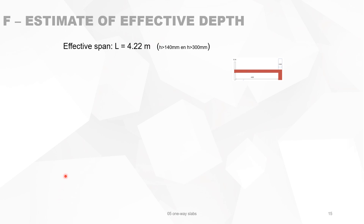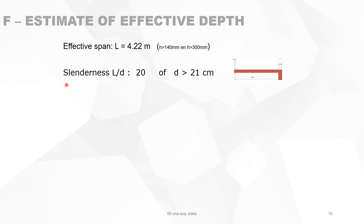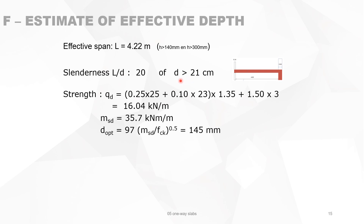First, we look at the effective span. The effective span is 4.22 meters. It is the minimum of half the slab thickness and half the support thickness. Since we do not yet know the slab thickness, we take half the support thickness, meaning the slab depth must be greater than 300 mm on this side — otherwise the effective span changes. We need to check this afterwards. As the slenderness ratio, we take L over d = 20 for a simply supported beam, which means d must be greater than 21 centimeters.